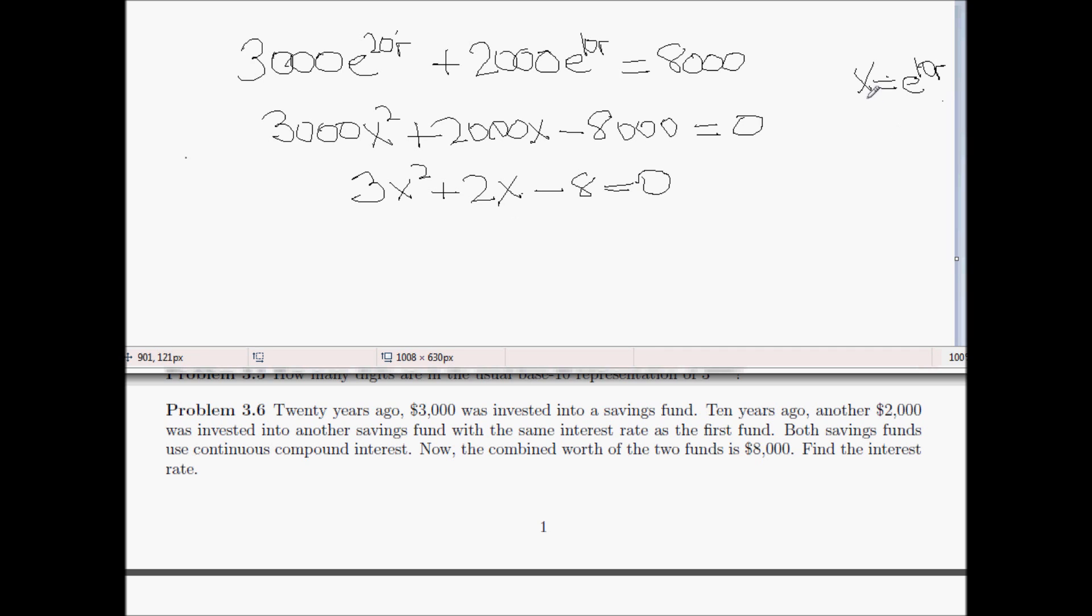Then once you solve for x to solve for r, we know that 10r is going to be equal to the natural log of x. So r is equal to one tenth the natural log of x. So use the quadratic equation over here to solve for x, and then once you have x, natural log of x divided by 10 will be equal to r. So that is the procedure for how to solve 3.6.